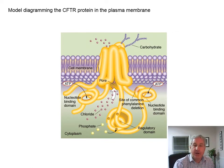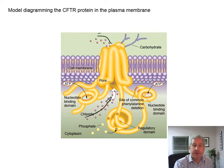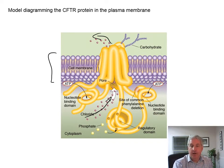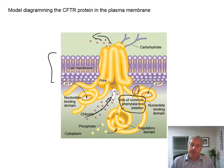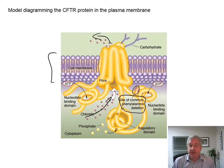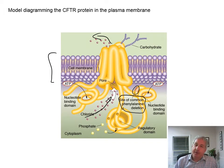Here's the channel with chloride ions going through and coming out. It goes across the cell membrane — it's a transmembrane protein. Here's the phenylalanine delta F508 mutation showing where the deletion of phenylalanine occurs. The protein just doesn't work quite right. That's the cystic fibrosis transmembrane conductance regulator, CFTR protein, in the plasma membrane.